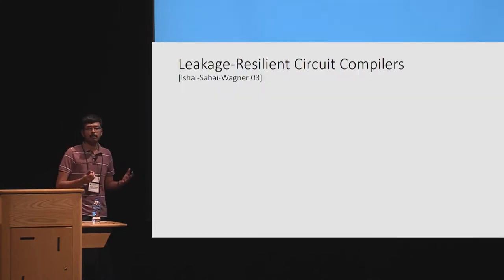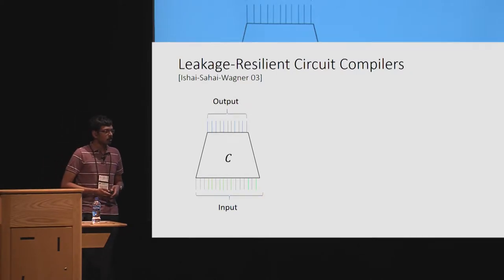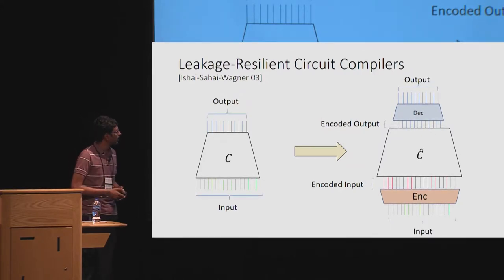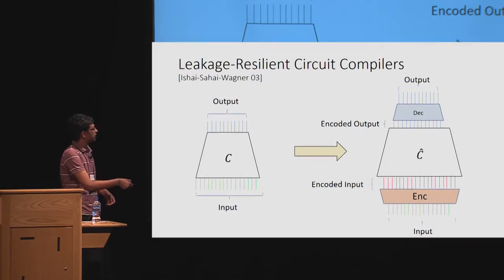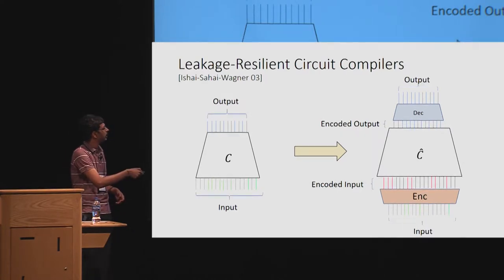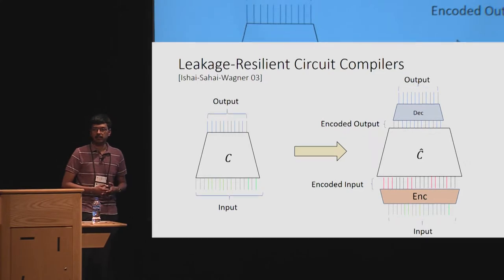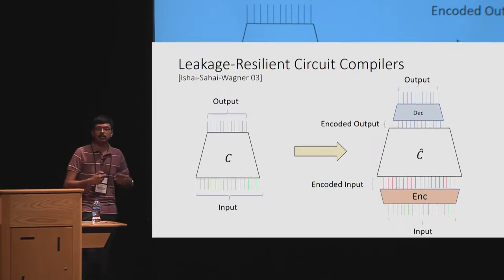Let me explain what is meant by a leakage-resilient circuit compiler. We model the sensitive computation as a Boolean circuit C that takes in a secret input and produces some output. A leakage-resilient circuit compiler takes in this circuit and transforms it into a randomized circuit C-hat, along with an encoder and a decoder. The encoder takes in the secret input and produces an encoded version. When we run C-hat on the encoded input, it produces the encoded output, which, when passed through the decoder, produces the output in the clear. The first required property is correctness: the output obtained by running C-hat on some secret input is the same as running the original circuit C on the same input — that is, functionality is preserved.